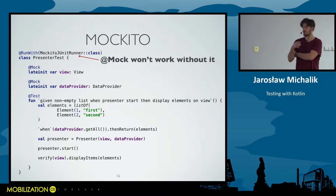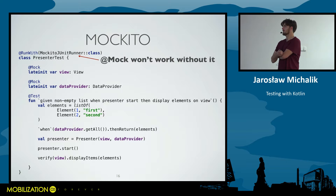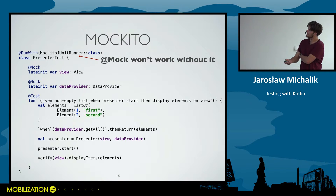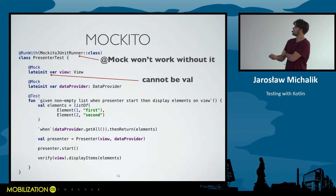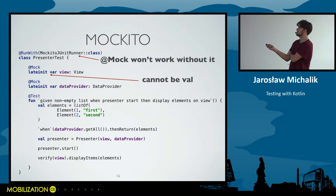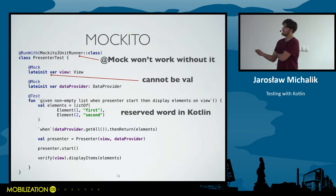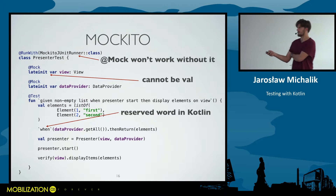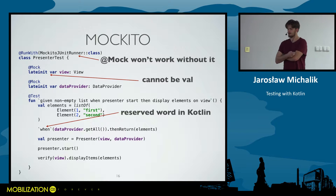Let's scratch the surface of mocking. We have a framework called Mockito, and its usage with Java is pretty great. But when it comes to writing idiomatic Kotlin code, it's not that easy. We have annotation-driven development, like many Java developers love. And since it's annotation-based, it cannot be final, it cannot be val, since the runner will inject mocks afterwards. And when we say what should happen when the mock class is invoked, Mockito uses a reserved word in Kotlin — so we have to write it in backticks.